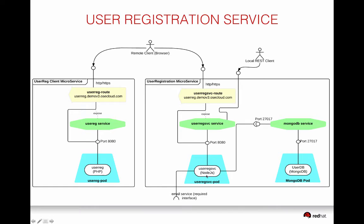The email service is written in Python, and the user registration backend is in Node.js using MongoDB. On the left side, there is another microservice — a PHP client that produces plain old HTML pages sent back to the browser. From the browser, you would make AJAX calls to the user registration microservice. So the job of this microservice is simply to produce the HTML UI required to display the application.